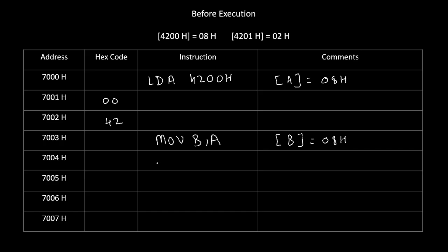Now we are ready to take the second number. We write instruction LDA 4201H. Because of this instruction, the accumulator gets loaded with the content of 4201H. Before execution, content of 4201H was 02H, so the new value of accumulator becomes 02H.